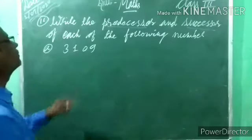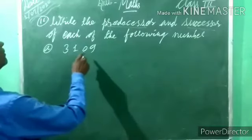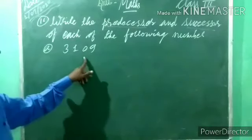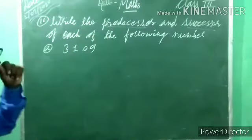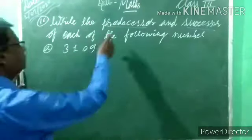First, look at this. How many digits does the number have? 1, 2, 3, 4. How to read it? 1, 10, 100, 1,000 — it's 3,109. What do we have to find? The predecessor as well as the successor. So first we will write the predecessor. Predecessor of 3,109: what do we have to do? Minus 1. So 3,109 minus 1 — 9 minus 1 is 8, then 0, 1, 3. So 3,108. The predecessor of 3,109 is 3,108.